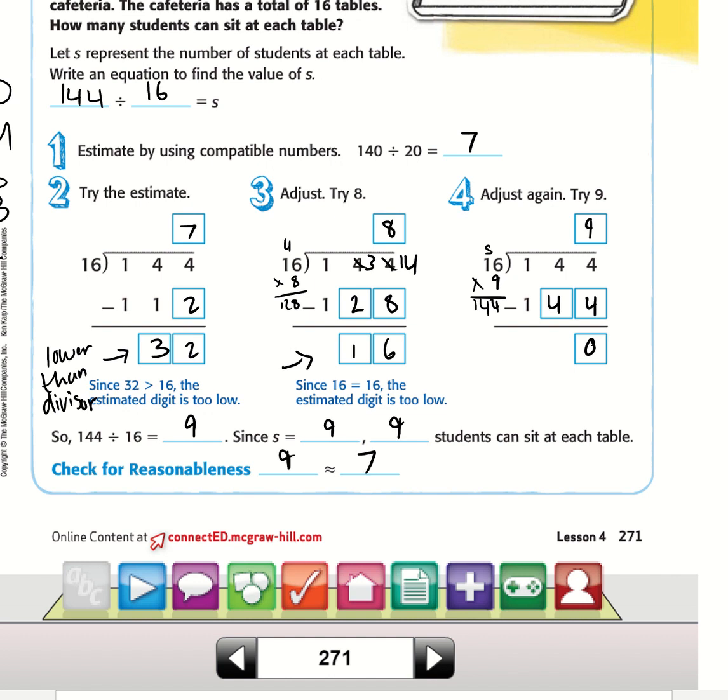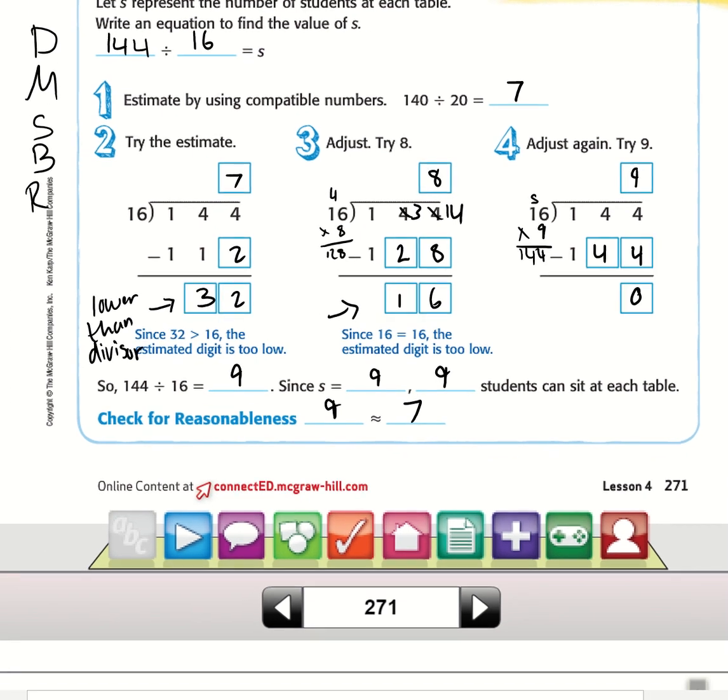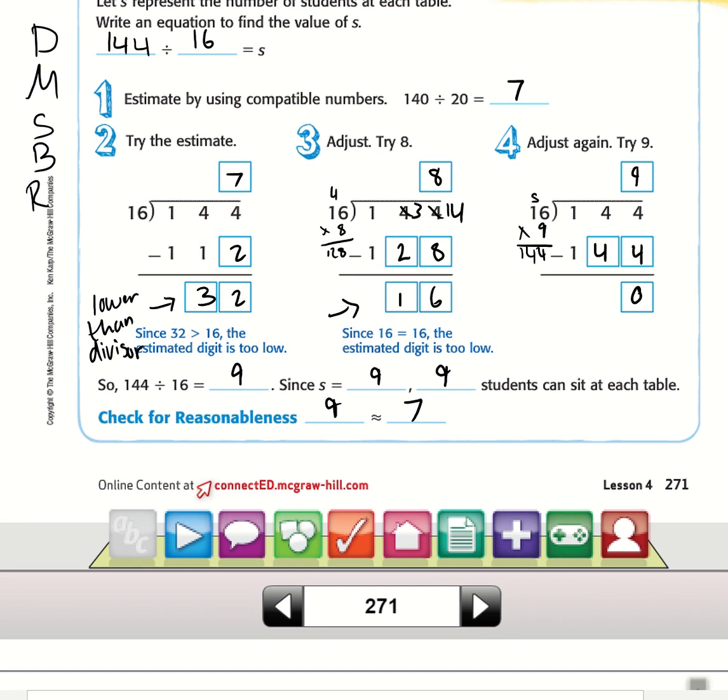Check for reasonableness. 9 is close to 7. So that's what it is to adjust the quotient—we tried a number and it was too small. This is the most important step: the number has to be lower than the divisor every time.